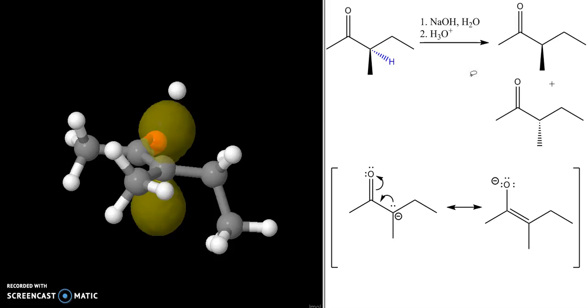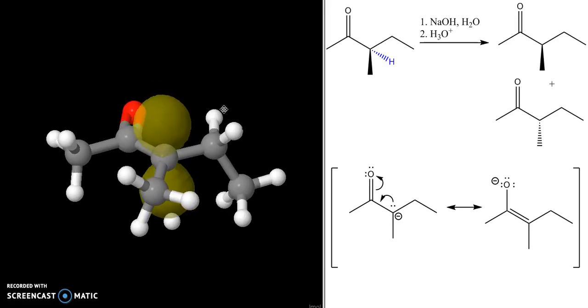This will give me the S isomer of my carbonyl compound, or the hydrogen can come in from the bottom face, giving me back the R isomer that I started with.